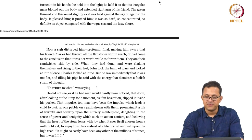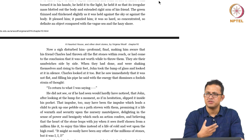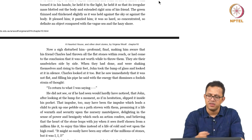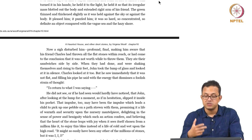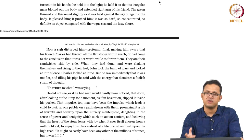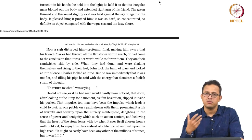'Now a sigh disturbed him, profound, final, making him aware that his friend Charles had thrown all the flat stones within reach, or had come to the conclusion that it was not worthwhile to throw them. They ate their sandwiches side by side. When they had done, and were shaking themselves and rising to their feet, John took the lump of glass and looked at it in silence.' There is almost an erotic tension developing here — he is looking at the glass piece, drawn into it as some kind of fetish formation. Charles looked at it too but saw immediately that it was not flat, and filling his pipe said with the energy that dismisses a foolish strain of thoughts, 'to return to what I was saying' — going back to the earlier, more rational, more political conversation. We know now that his friend John has drifted to a more irrational, uncanny economy — an economy about broken, solid, non-utilitarian objects.